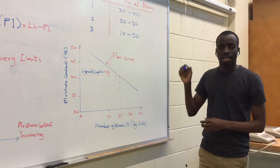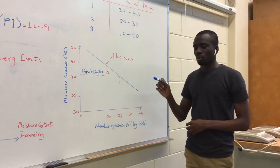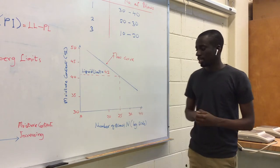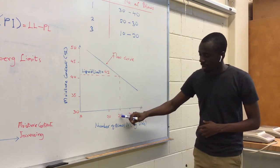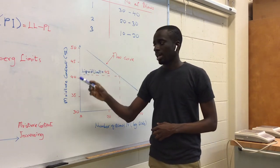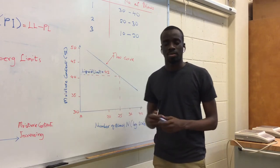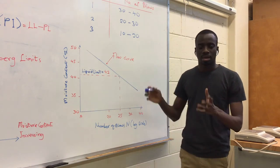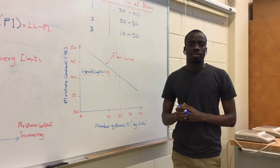The liquid limit is the moisture content at which we are able to close the groove at 25 blows. To determine that, we just trace our 25 blows up to the flow curve and to the vertical axis and the corresponding moisture content becomes our liquid limit. That is why we have liquid limit at 42%.